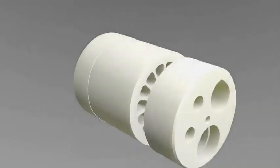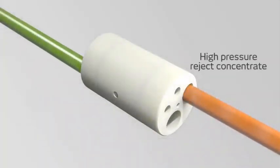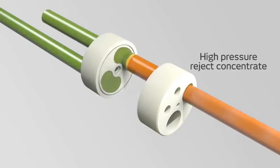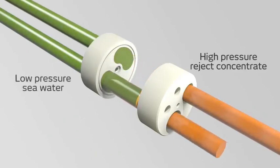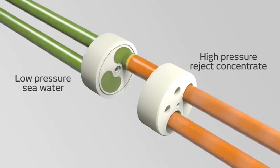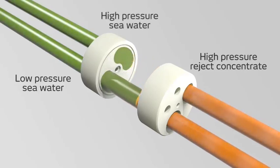High-pressure reject concentrate from a reverse osmosis plant's membranes flows into the PX. Low-pressure seawater simultaneously enters the PX and fills the rotor, where it is exposed briefly to the reject concentrate. Energy from the hydraulic pressure is then transferred directly from the concentrate to the seawater inside the rotor.